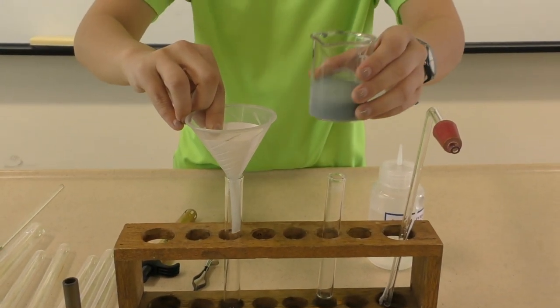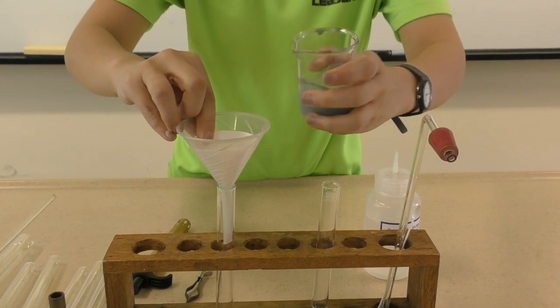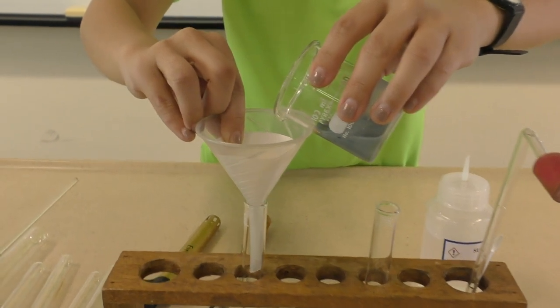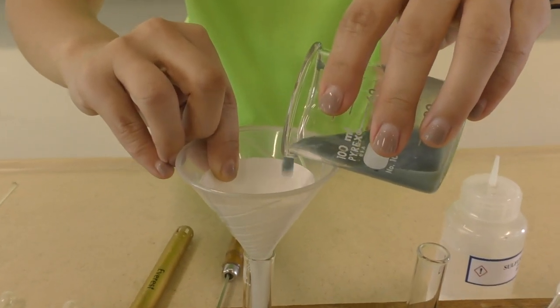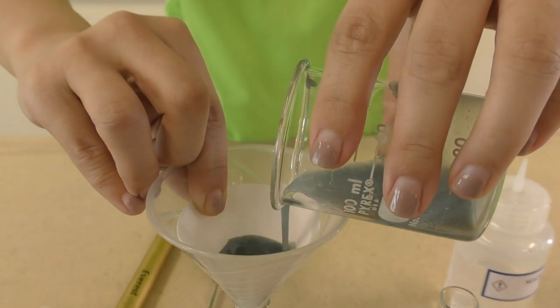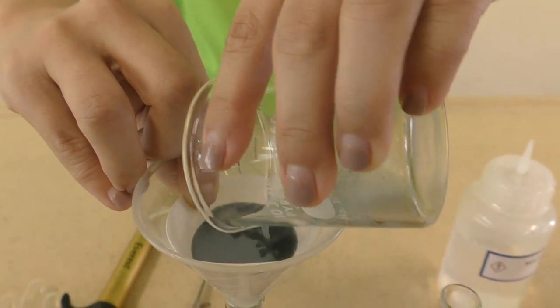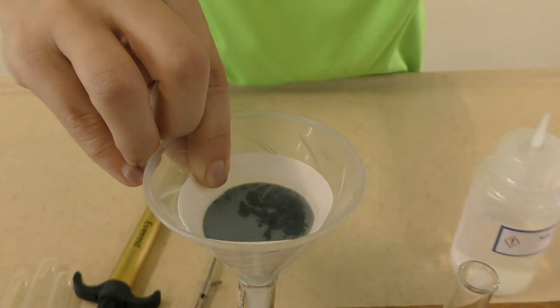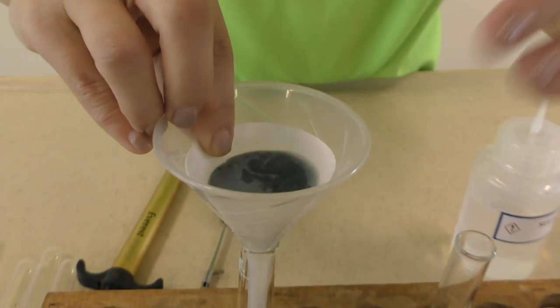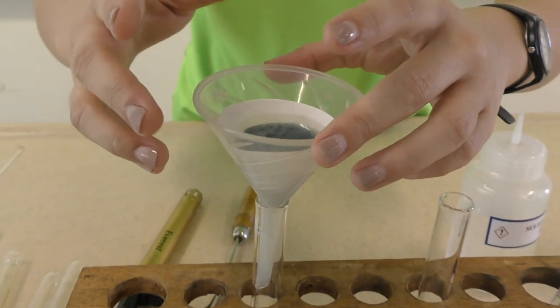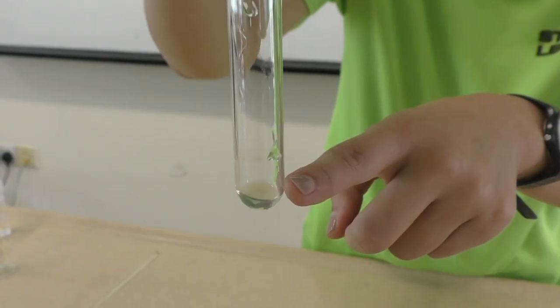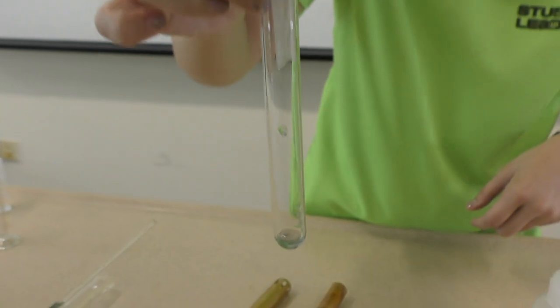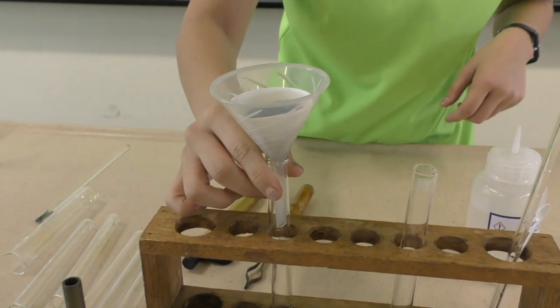Stir the mixture in the beaker and pour it into the filter funnel slowly. Allow it to filter. Initially, a small amount of solid material will likely pass into the test tube.